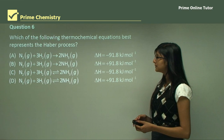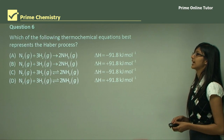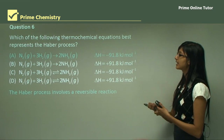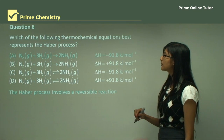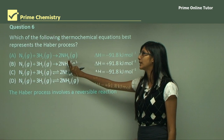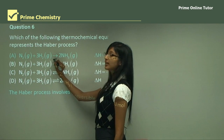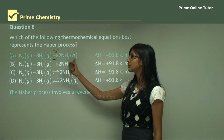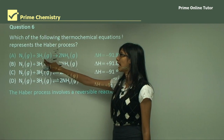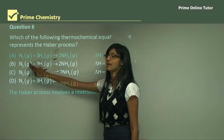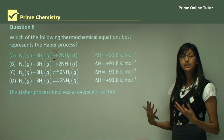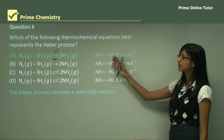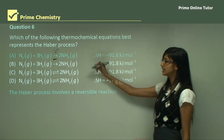Question six asks which thermochemical equation best represents the Haber process. Equation A shows two molecules of nitrogen plus three molecules of hydrogen forming two molecules of ammonia, but it does not show a reversible reaction — the arrow indicates only a forward reaction. This means ammonia does not dissociate back to nitrogen and hydrogen, which is incorrect, because the Haber process is an equilibrium reaction where both forward and backward reactions occur.